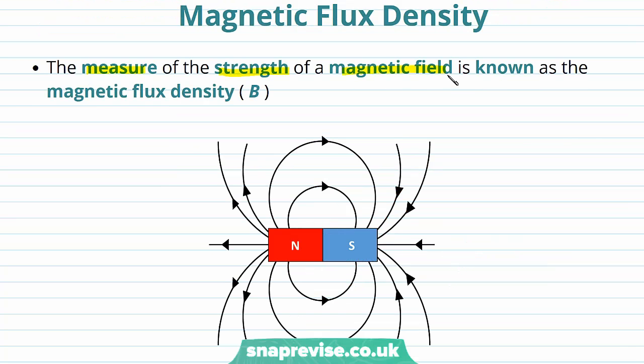The measure of the strength of a magnetic field is known as the magnetic flux density. And we give the symbol B to this. Which is why we sometimes refer to a magnetic field as a B field.